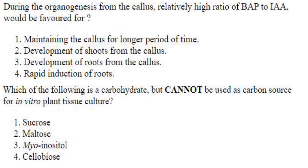During organogenesis from callus, a relatively high ratio of BAP — BAP is a cytokinin — to IAA, which is an auxin, would be favored for development of shoots from the callus. A high cytokinin-to-auxin ratio does not maintain callus for a longer period; it promotes shoot development. Answer is option 2.